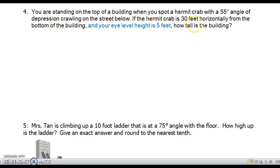So let me just read the problem to you and update your problem as needed. You are standing on the top of a building when you spot a hermit crab with a 55 degree angle of depression just crawling on the street below. The hermit crab is 30 feet horizontally from the bottom of the building and your eye level height is 5 feet. How tall is the building?